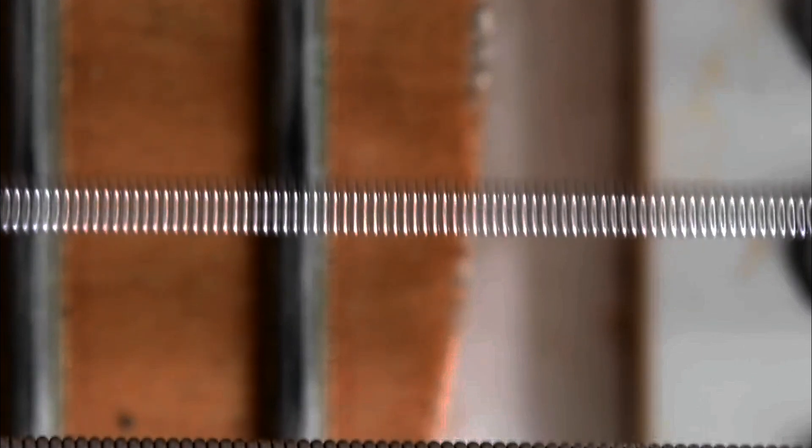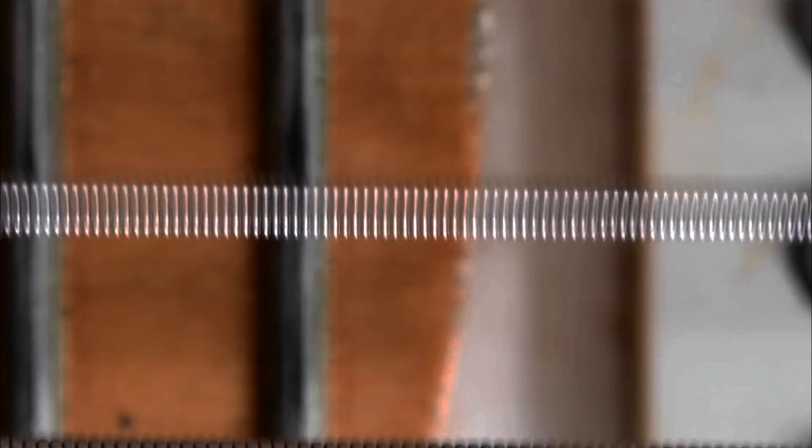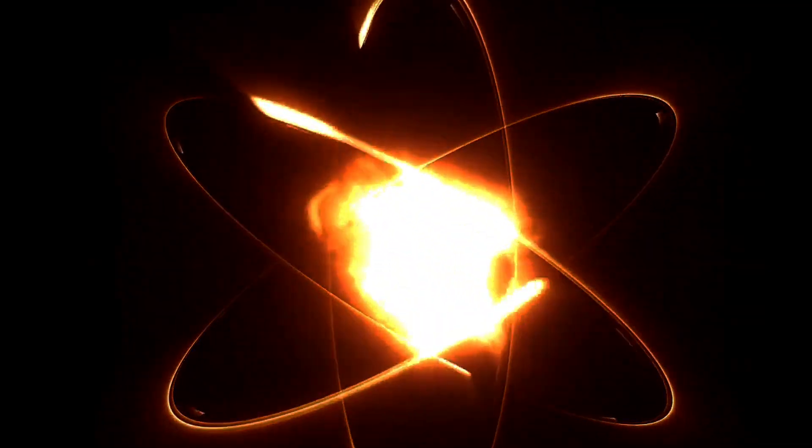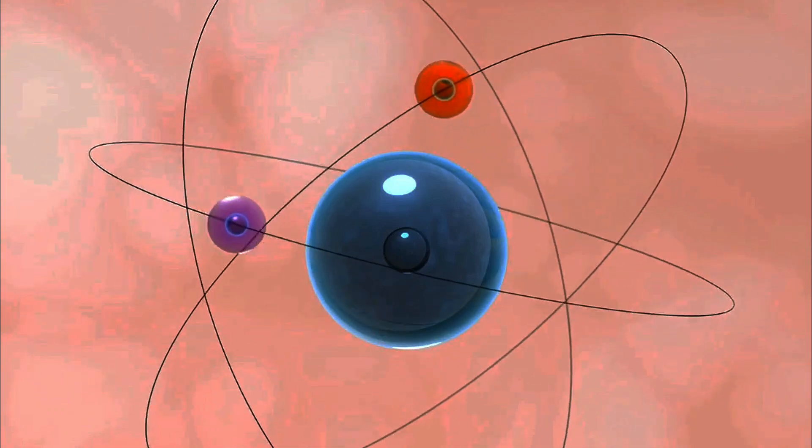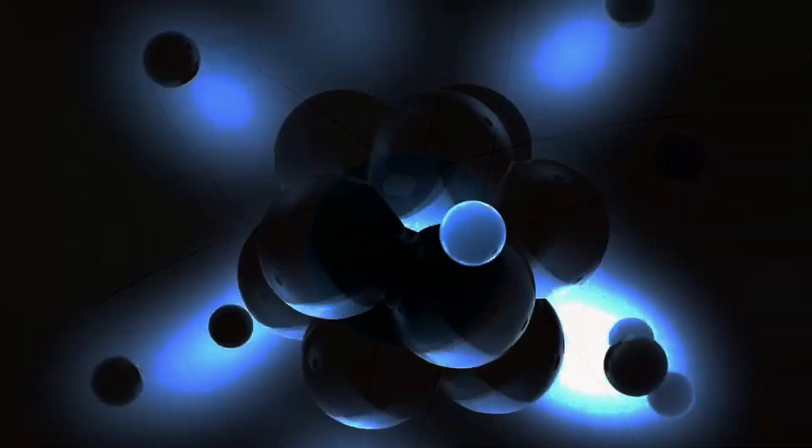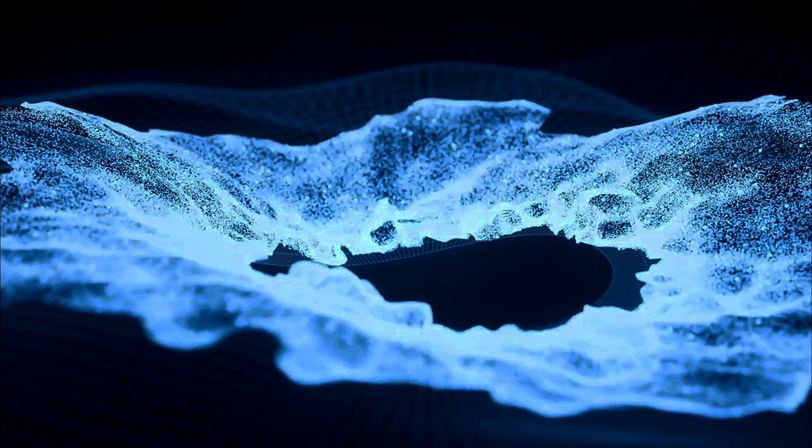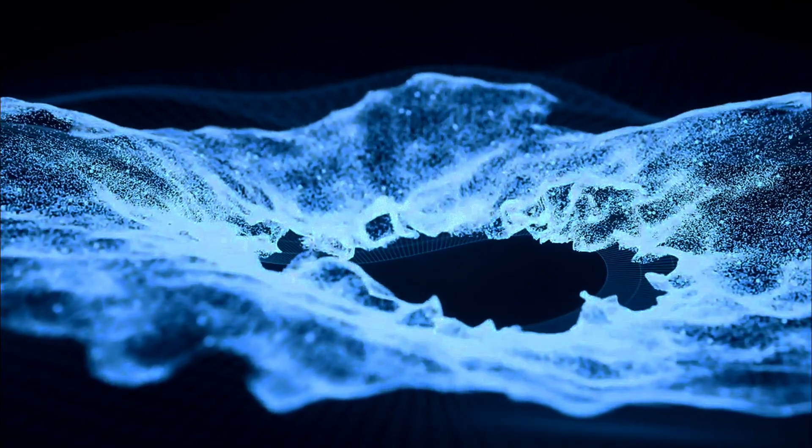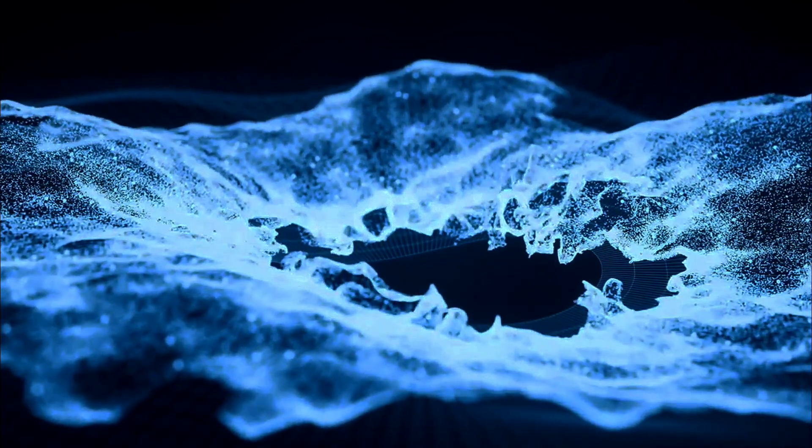Imagine the strings of a guitar vibrating at specific frequencies to produce musical notes. Similarly, electrons in an atom vibrate in wave-like patterns, occupying specific energy levels. These wave-like patterns are called orbitals. They are fundamental to understanding the behavior of electrons in atoms.